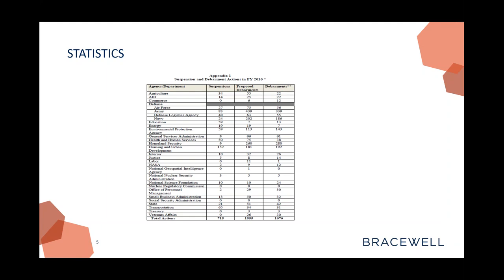Some agencies are more active than others, and that's a function of size and spending. But look at agencies like the Department of Interior — a few years ago I don't think they were proposing anybody for suspension and debarment. Last year they had 26 debarments, which is substantially more than they would have had within the last few years.